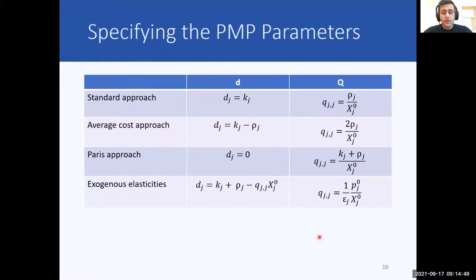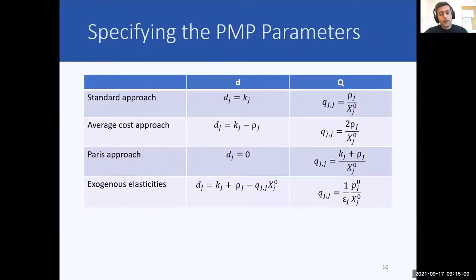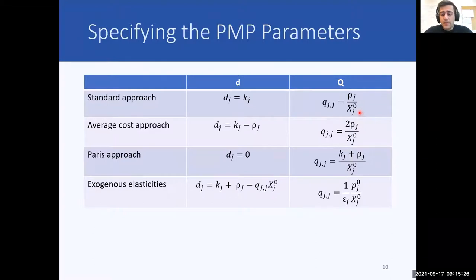There are many different ways of specifying the D and Q parameters; here I will introduce four of them. In the early days of PMP, the specification was simply solved by letting D equal K (our costs) and calculating Q accordingly. This was motivated by computational simplicity, but based on ex-post simulations it was found that this approach results in poor response behavior, characterized by strong overreactions to changes in economic incentives.